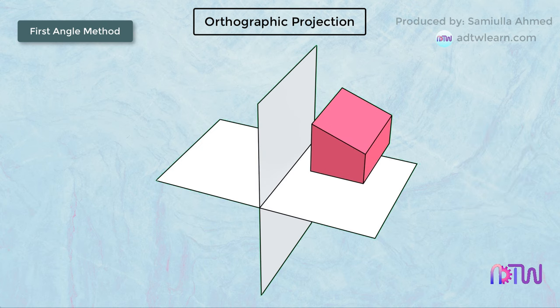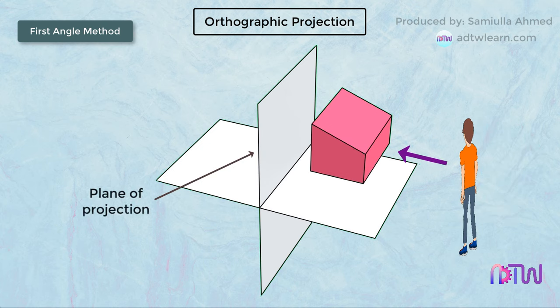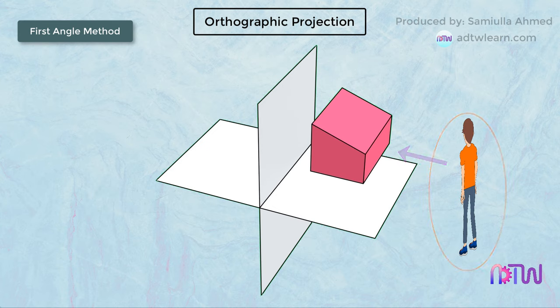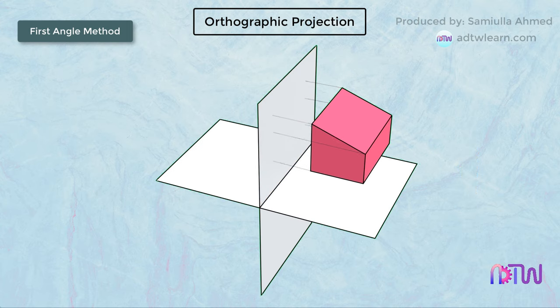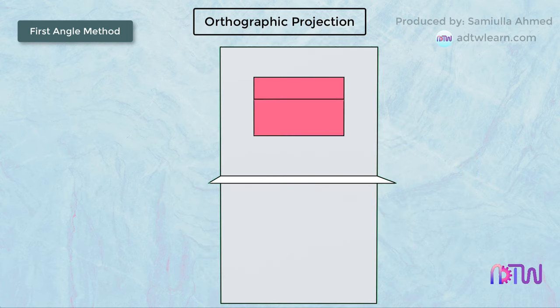In the first angle method, the object is placed in the first quadrant such that it lies between the viewer and the plane of projection. Considering the observer is standing at a point, the view from that point is considered the front view. When the viewer views the object from the front, its projection is projected on the vertical plane of the first quadrant. You can see from the viewer's eye how the front view of this object looks.